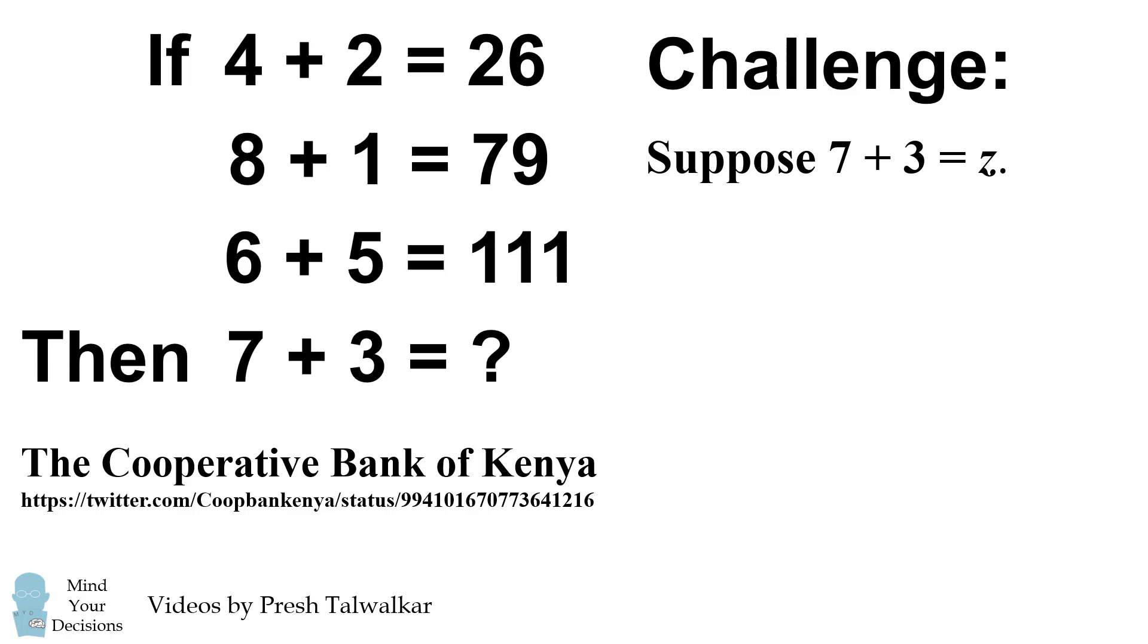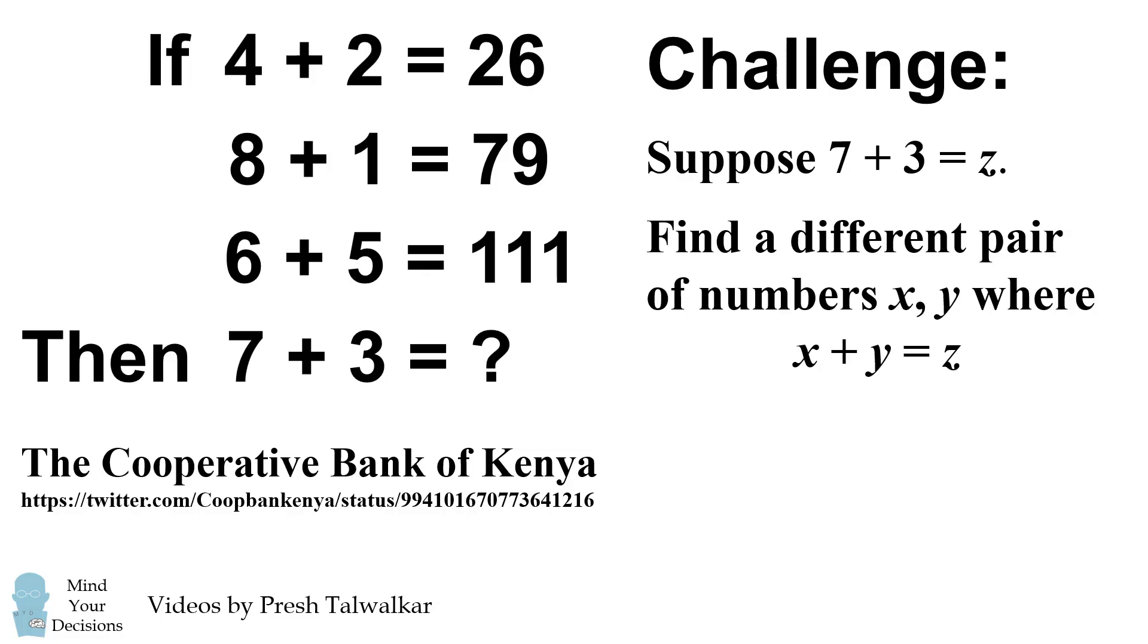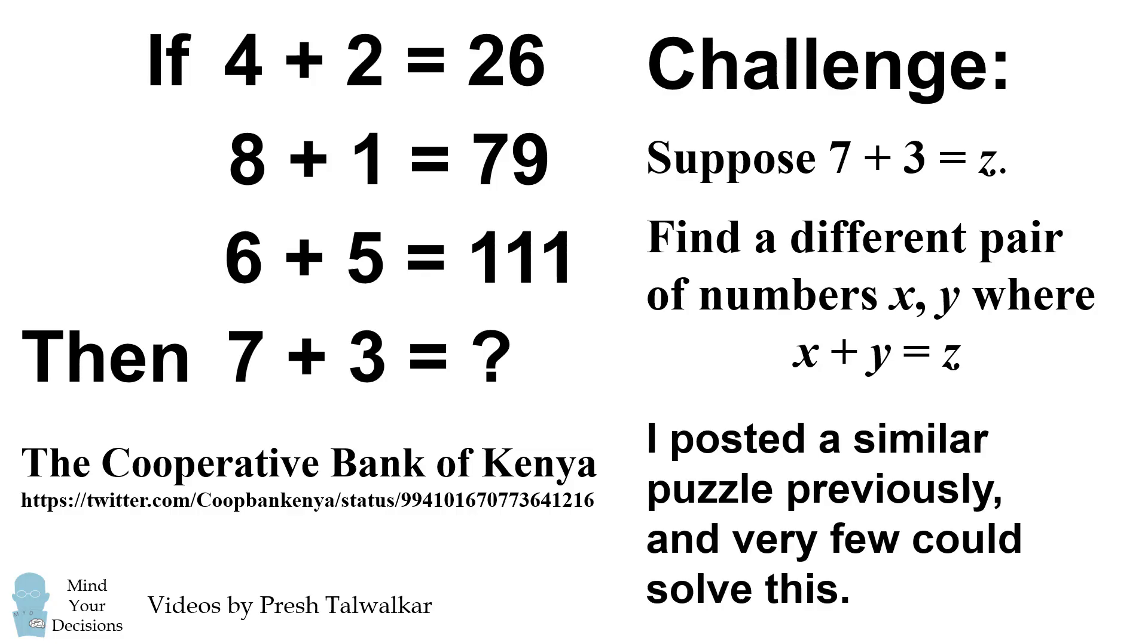Suppose you know that 7 and 3 combine to be z. I want you to find a different pair of numbers x and y that also combine to be z. I posted a similar puzzle previously and very few people could solve this challenge problem. Can you figure it out? Give this problem a try and when you're ready keep watching the video for a solution.